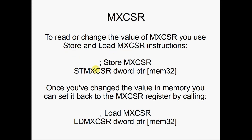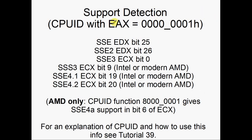To store the MXCSR register, you use the STMXCSR instruction, which takes a single 32-bit memory location. Once you've changed the values in memory or in your x86 registers, you can load it back into the SSE MXCSR register by calling LDMXCSR — that also takes a single 32-bit memory operand. We'll go into that in more detail later.